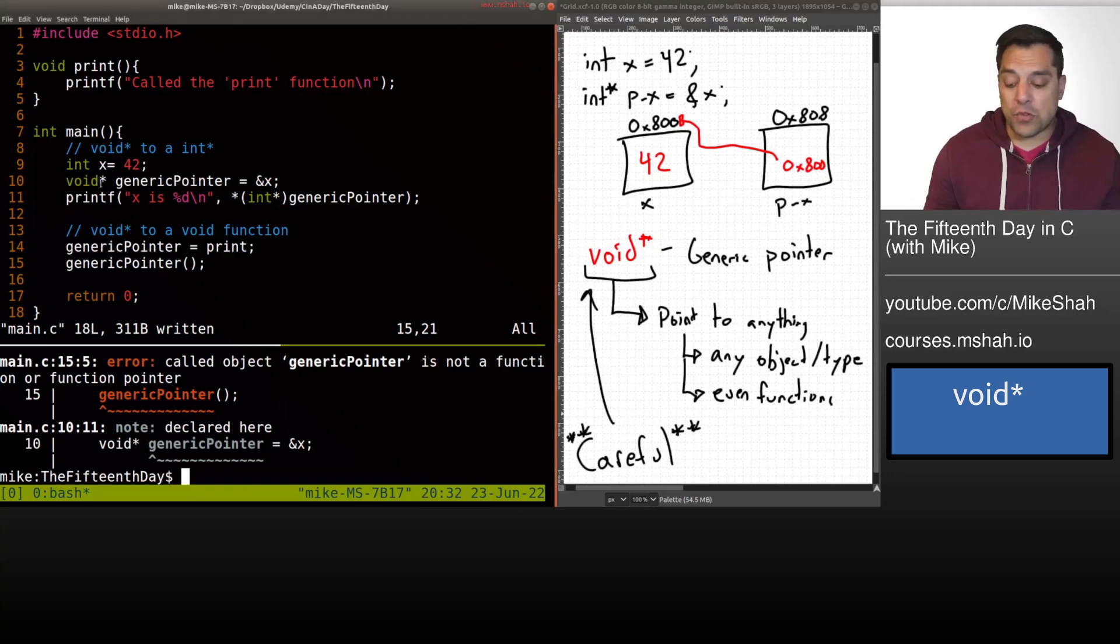So again, in order to call this function, we just can't dereference it. And in general, that's the rule, right? With a void star, we can't dereference a void star pointer, we have to cast it to the right type. And again, because we have to, as programmers choose the right type, that's what makes this dangerous. So I'm going to again, highlight this this time in red, void, just to be careful.